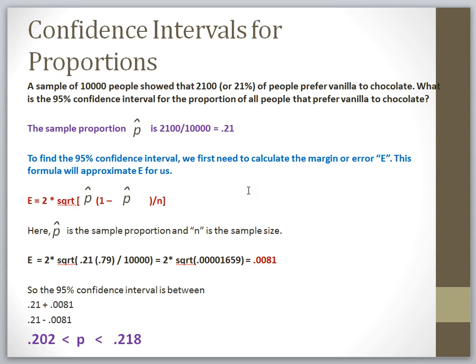Hey everybody and welcome back. This is How-To Videos with Dr. Amy Gates, and we are now on part two talking about confidence intervals, sampling distributions, margins of errors, and sample sizes. We just finished talking about the example of finding the 95% confidence interval about a population proportion, and we're going to move on to the next example.